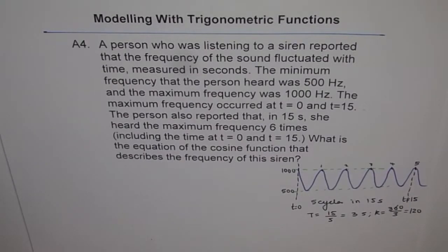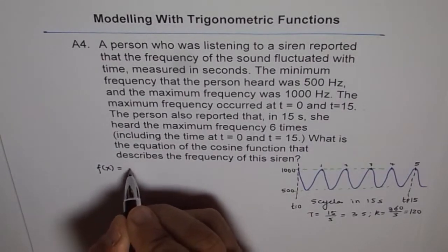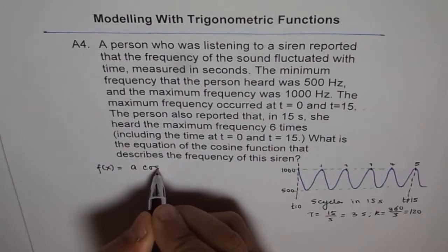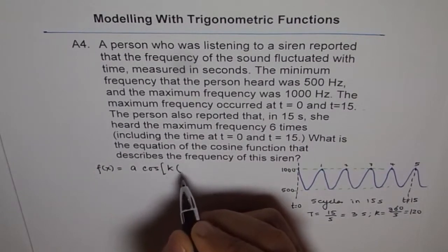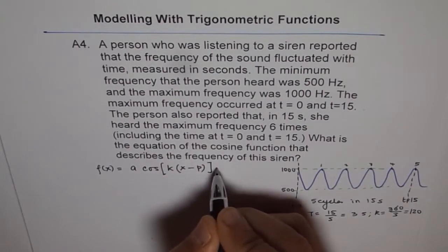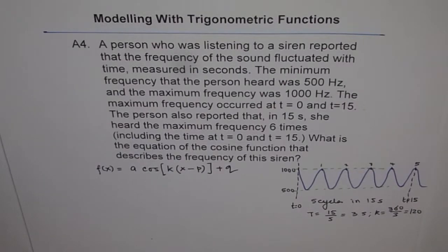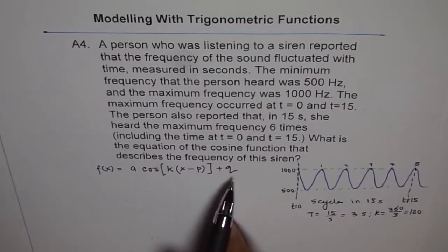Now let us start all over again. So what we need to do is, we need to model this as a cosine function. So we can say the frequency can be written as f of x equals a times cos k, and let us say x is my variable, minus p plus q. So that is the general equation for any sinusoidal function. Now here, how to find a, k, p and q? We already found k from time period.